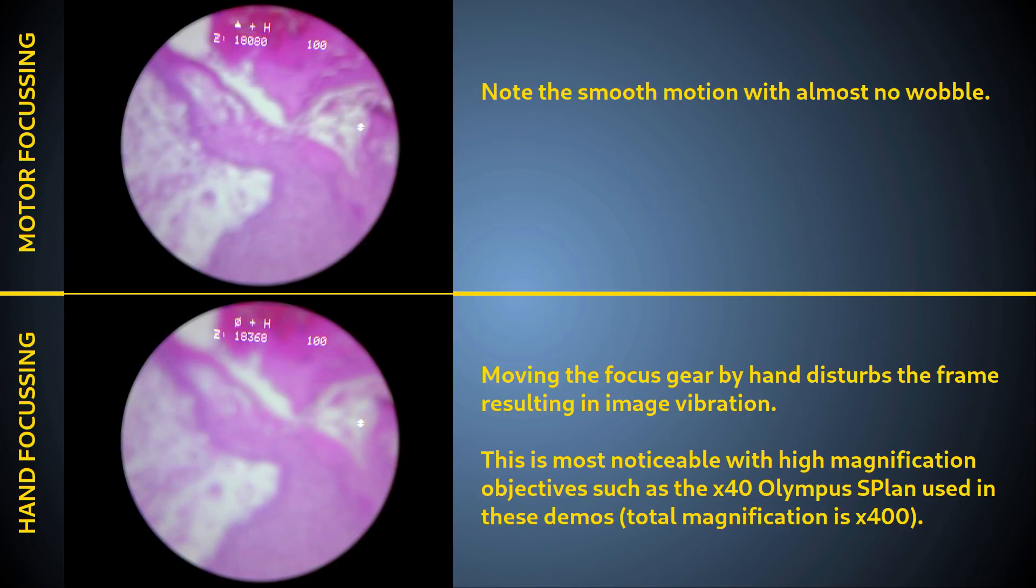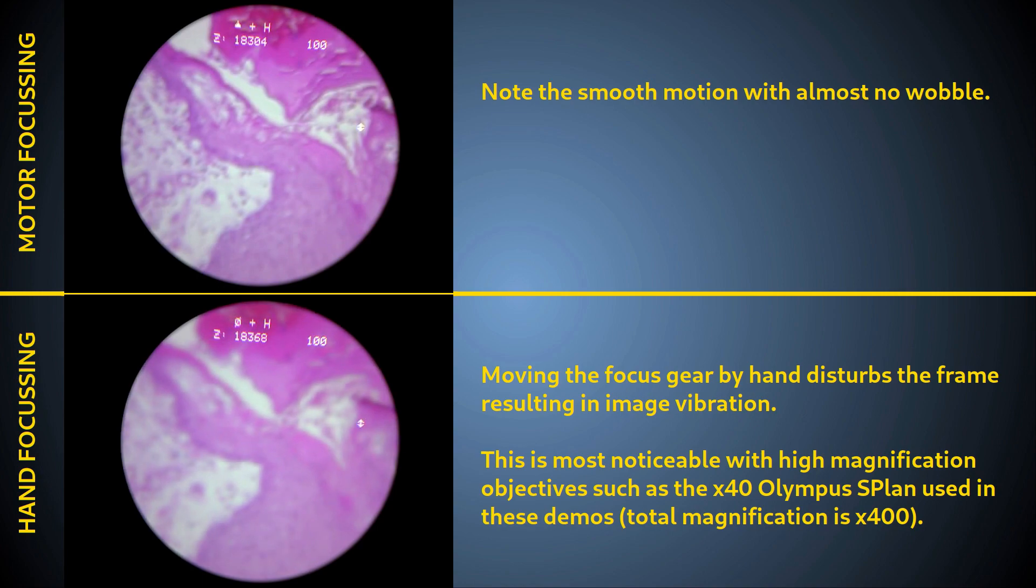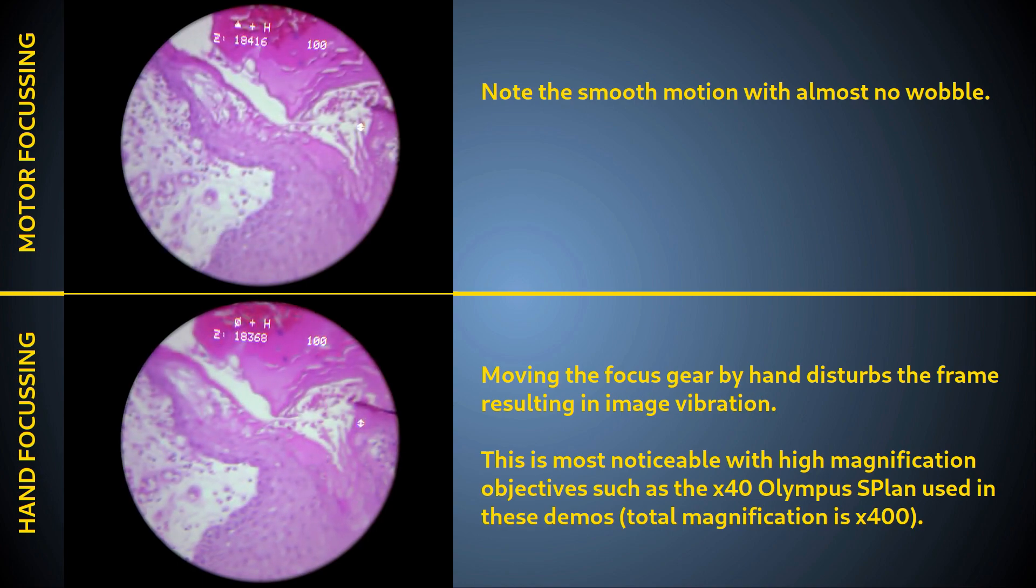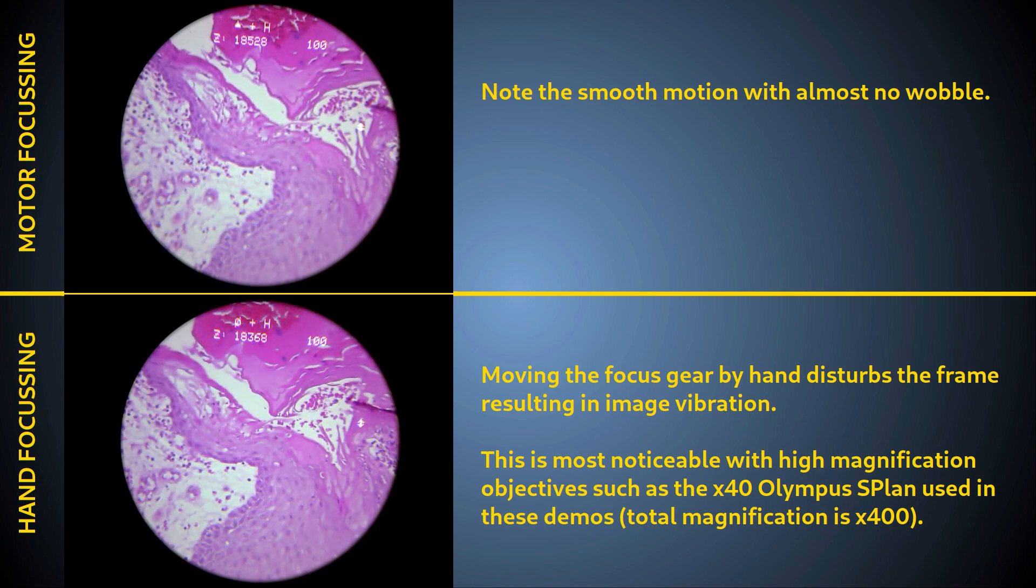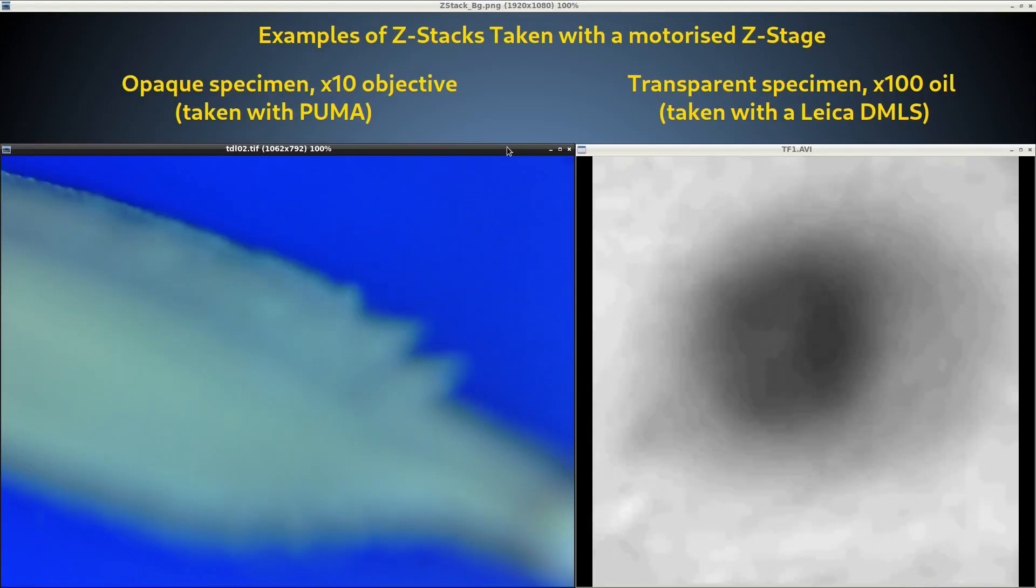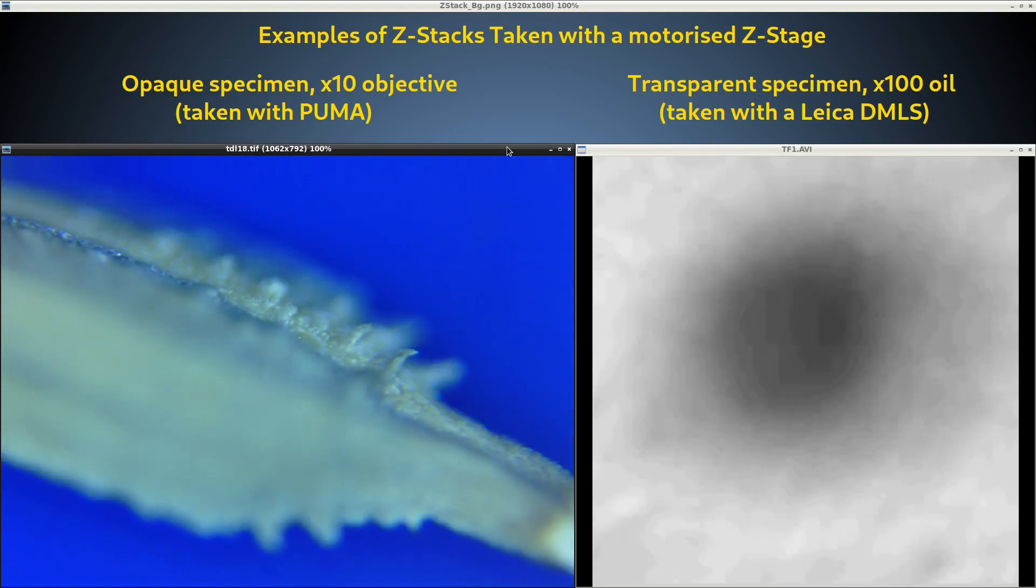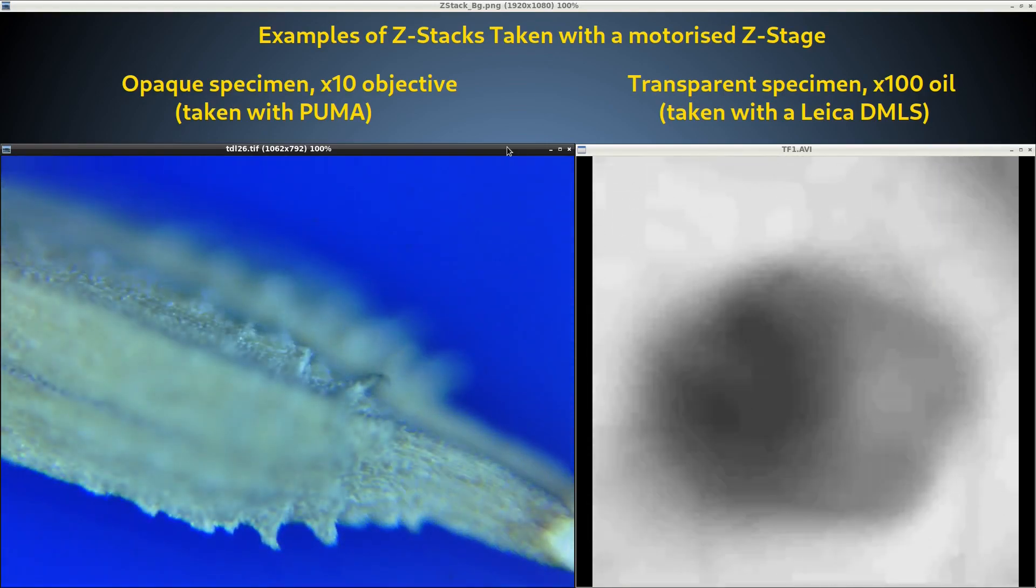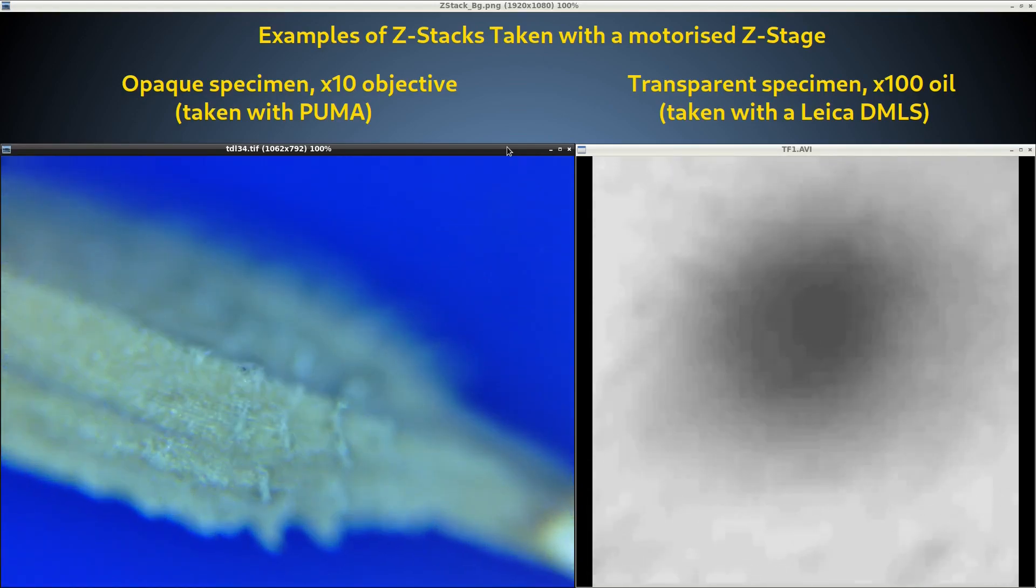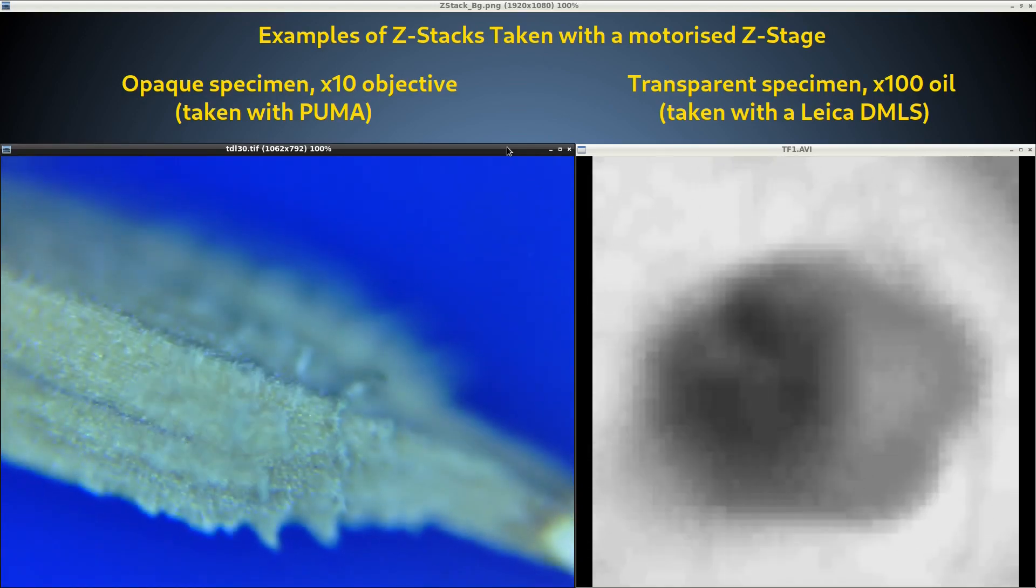Using a Z-motor has many advantages. For example, use of a Z-motor effectively eliminates the image wobble that can occur when focusing manually at high magnifications. With a Z-motor, you can capture an accurate and repeatable series of images through a thick specimen at a sequence of evenly spaced depth planes. This is called a Z-stack.